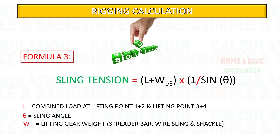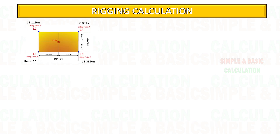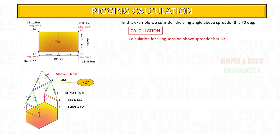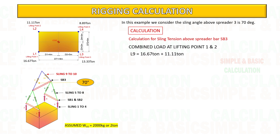This is formula number three for calculating the tension above spreader bar number 3. We need to combine the load at lifting points number 1 and 2 with lifting points 3 and 4. In this example, we consider the sling angle above spreader bar number 3 is 70 degrees. Based on the formula, calculate the tension in each sling. Take note: we also need to consider the weight of the lifting gear below wire slings number 9 and 10, the same as we did in formula number two.